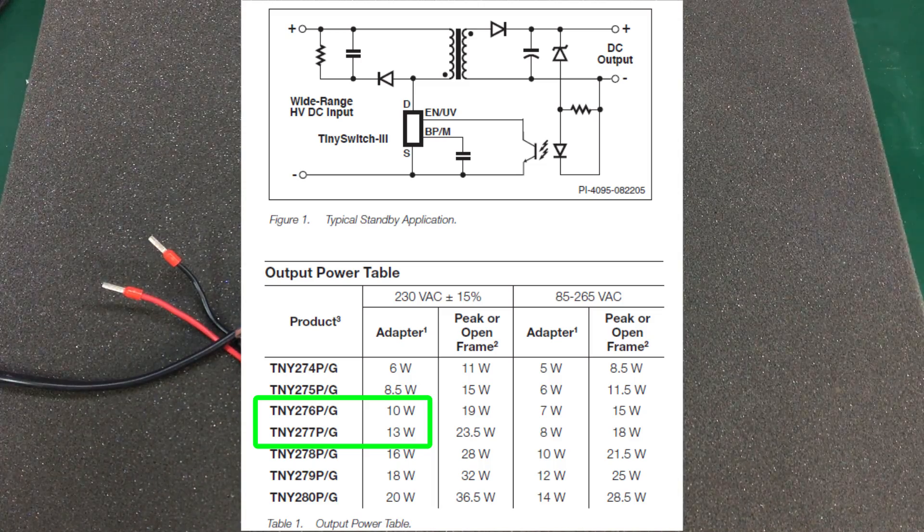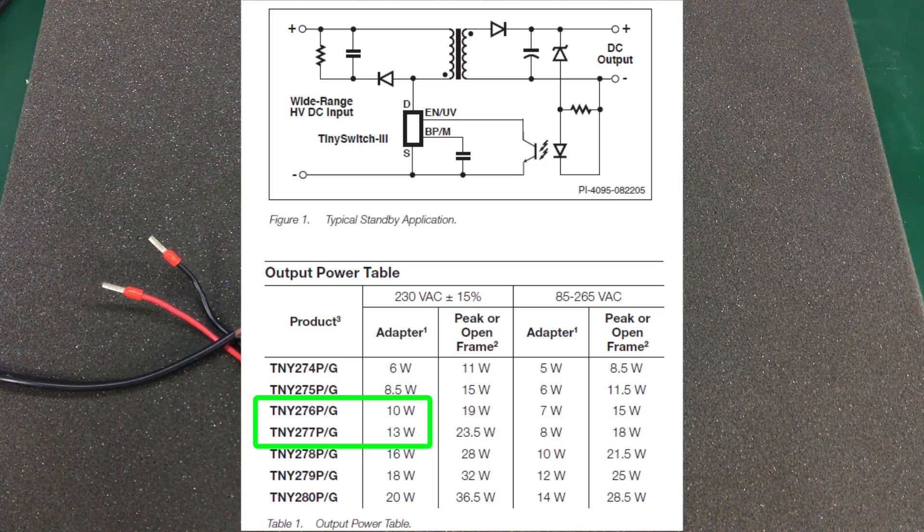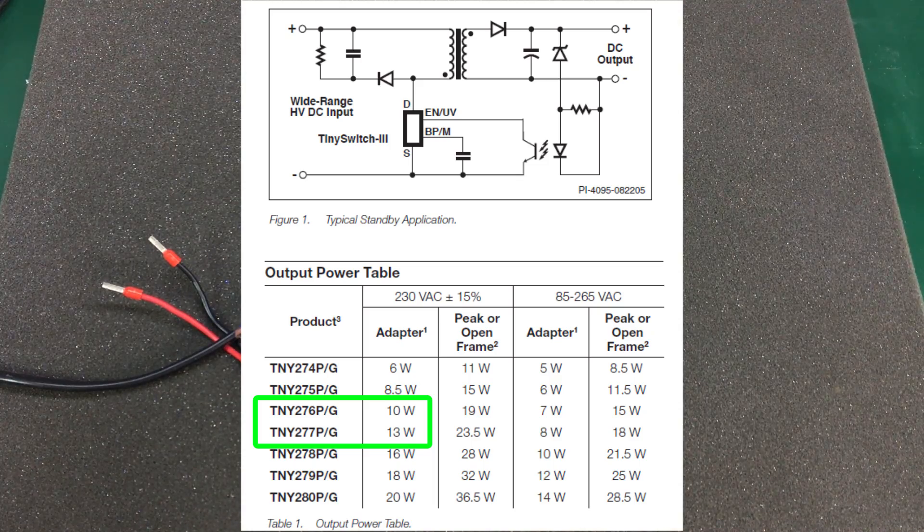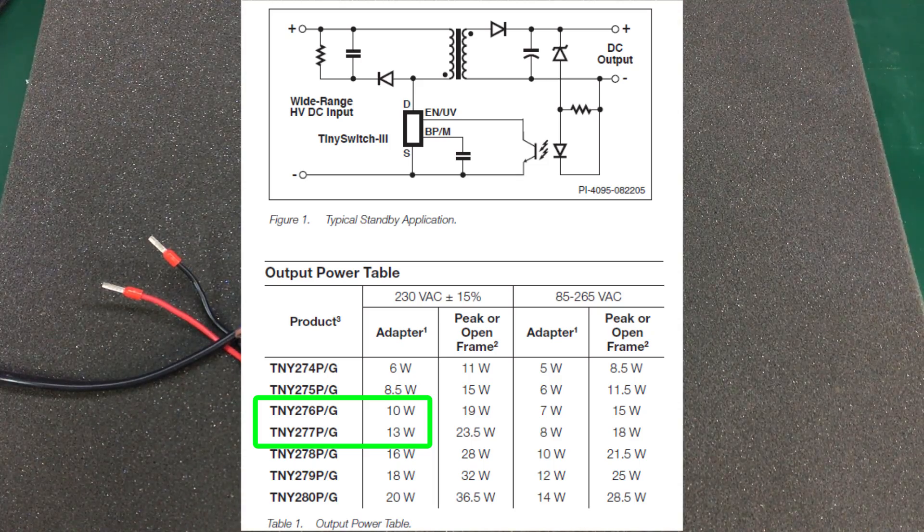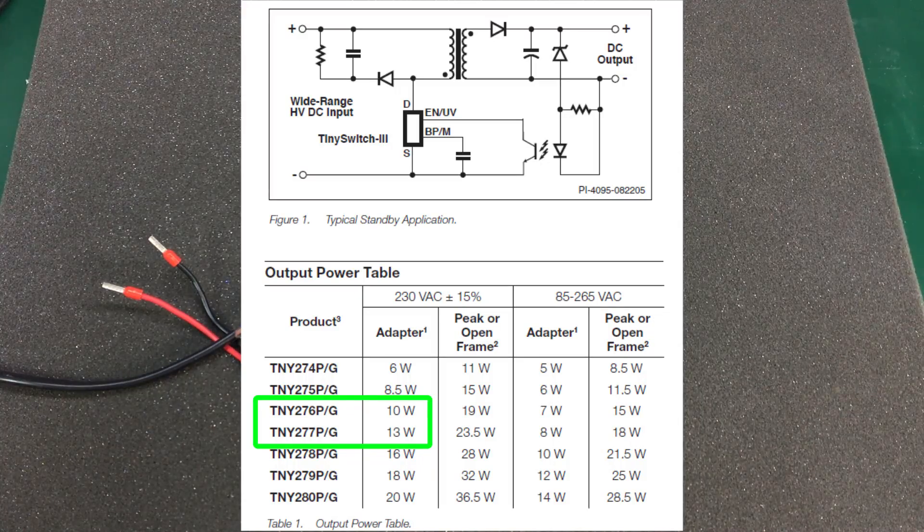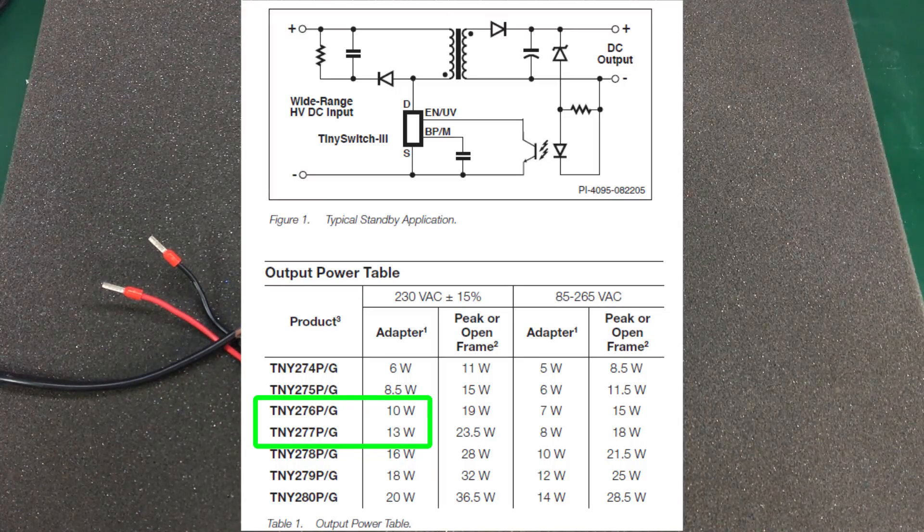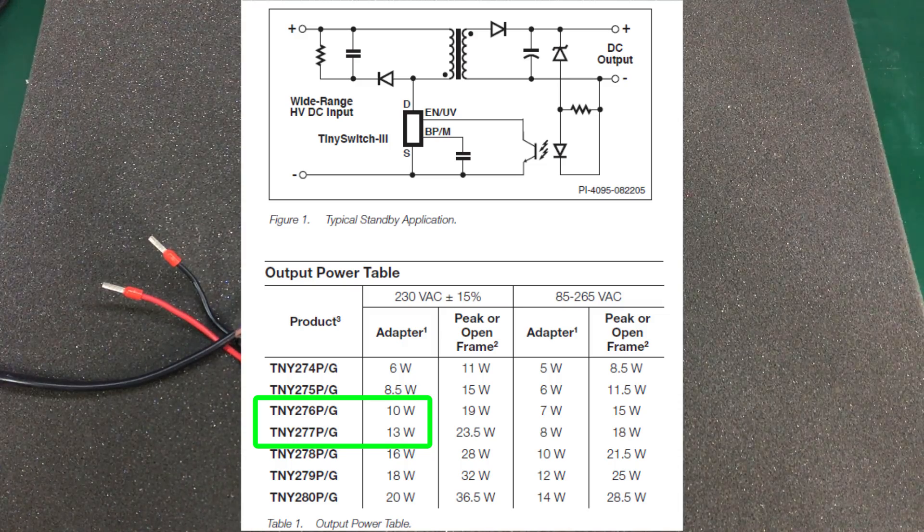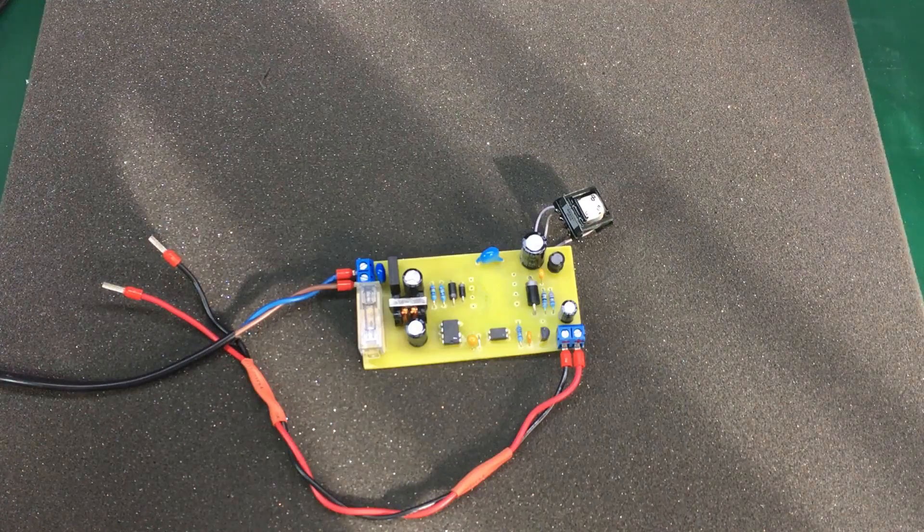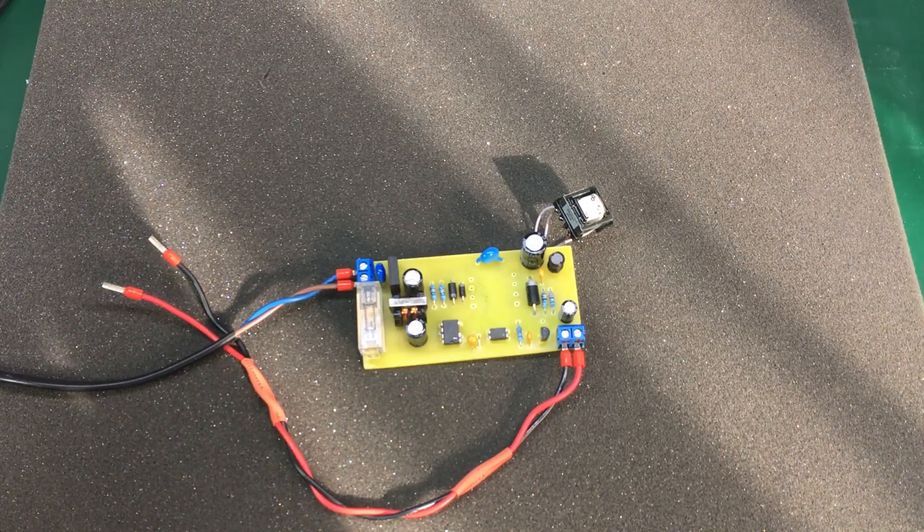So now I'm thinking this transformer might have a low inductance at the working frequency of the control IC, that is 132 kHz, and it might pass too much current through the internal MOSFET causing it to overheat. When switching to the TNY-277, that current might be within limits due to the increased power capability of the TNY-277.